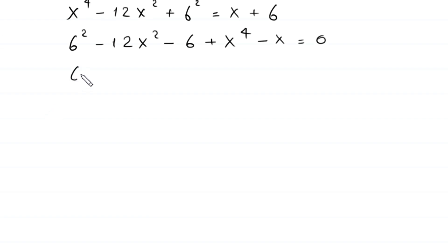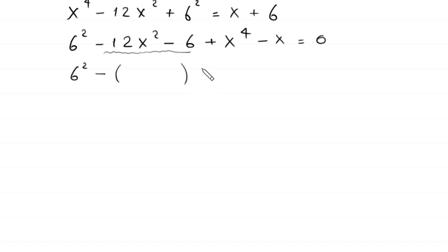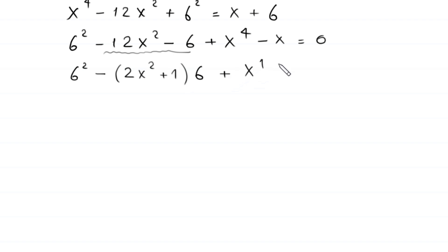Rearranging and moving x and 6 to the left-hand side, we factor out negative 6 from the terms negative 12x squared minus 6, leaving negative 6 times the quantity 2x squared plus 1, plus x to the power 4 minus x, equal to 0.